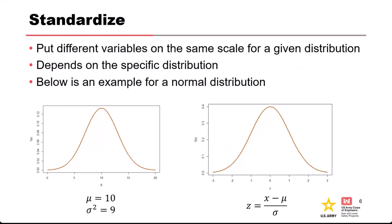One of the common things we do with distributions is standardize them, because it can put different distributions for different variables on the same scale, which makes it much easier to do basic visual and numerical comparisons. How you standardize really depends on the specific distribution. For a normal distribution, we transform things to normal probability space or Z-space.